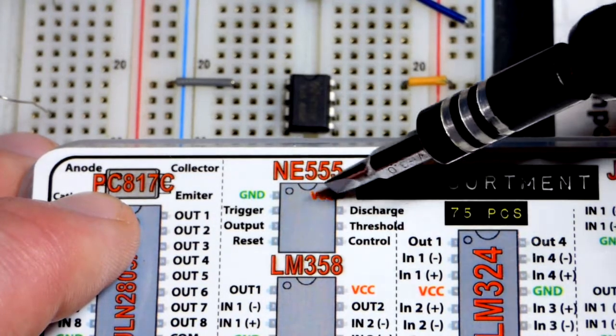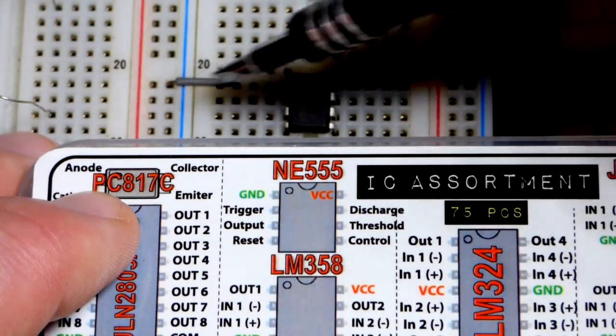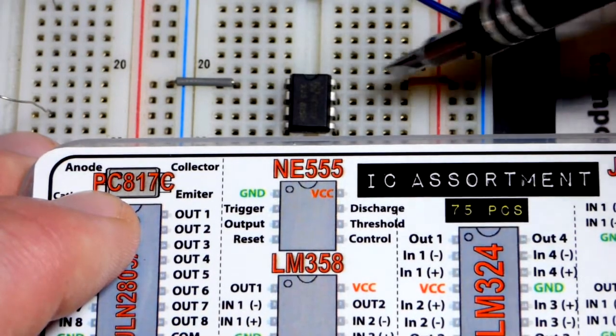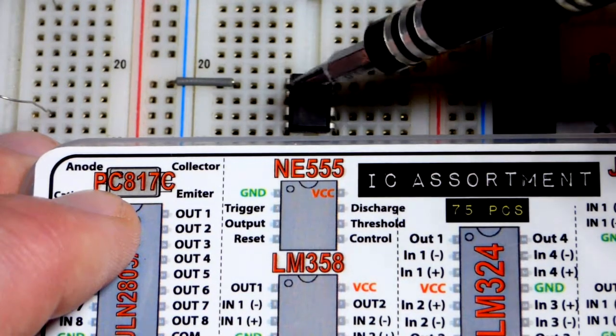The pins are numbered 1 through 8. Ground is the negative rail right there. We consider that 0 volts. I'm using 5 volts, so we consider this 5 volts. So that powers it.